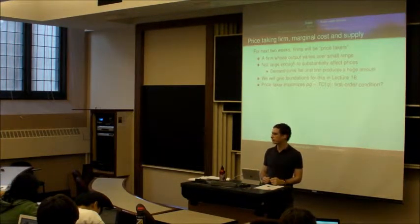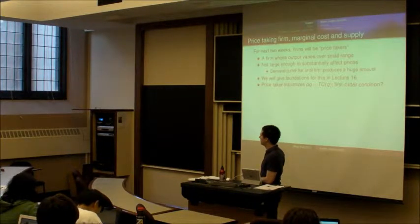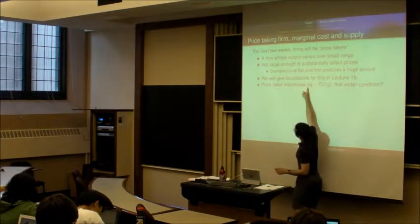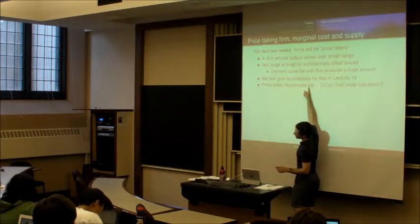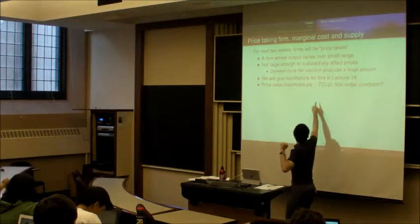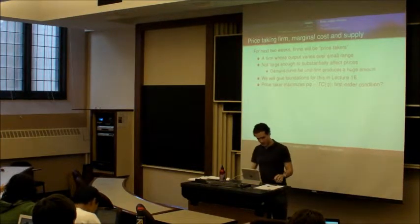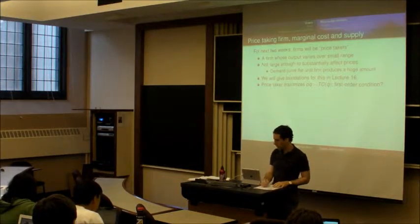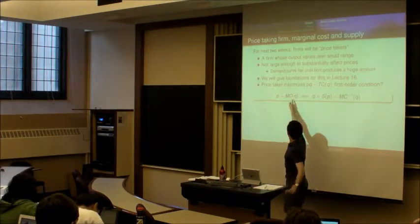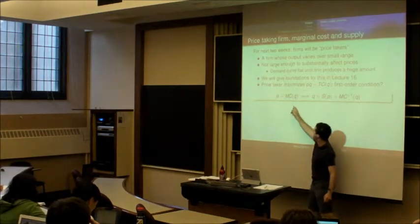And Christine, what's the first order condition for a profit-maximizing price-taking firm? Just here's the expression. What happens if you take a derivative with this and assume that the price doesn't change when the quantity changes? Yeah. And what's the derivative of the TC? Exactly. That's exactly right. So the first-order condition for a price-taking firm is that price is equal to marginal cost. Another way of saying that is we can invert this relationship and say that the quantity that the firm supplies is the supply function of the price, where the supply function is the inverse of the marginal cost.